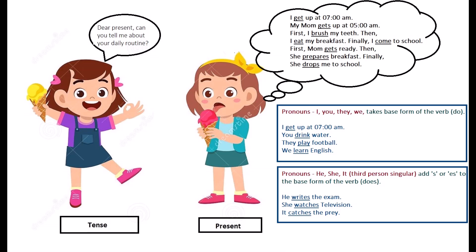Along with the pronouns I, you, they, we, we always use the base form of the verb. Means, we are using the verb as it is. We are not adding S or ES to the verb. You can see examples: I get up at 7 am. You drink water. They play football. We learn English.